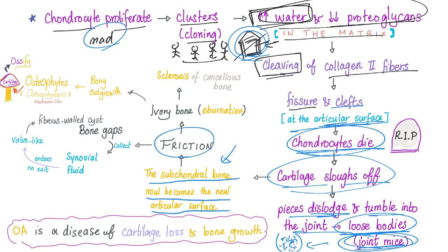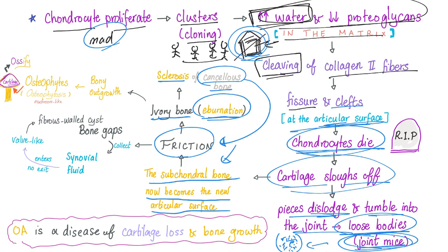The exposed bone becomes ivory bone through a process called ebernation — the bones grow scars and become tough in order to withstand friction. This ebernation leads to sclerosis of the cancellous bone, since those are the guys in contact with the joint surface.